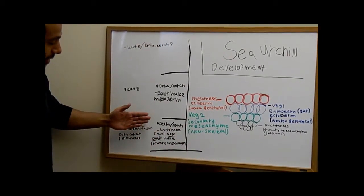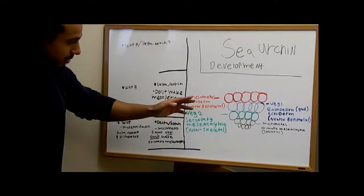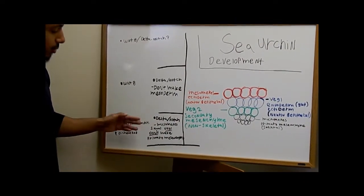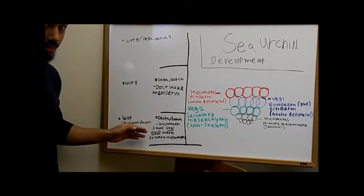We also have the delta-notch pathway, which works between the micromeres and veg2. And the micromeres are, through the delta-notch pathway, able to tell veg2 not to make primary mesenchyme.